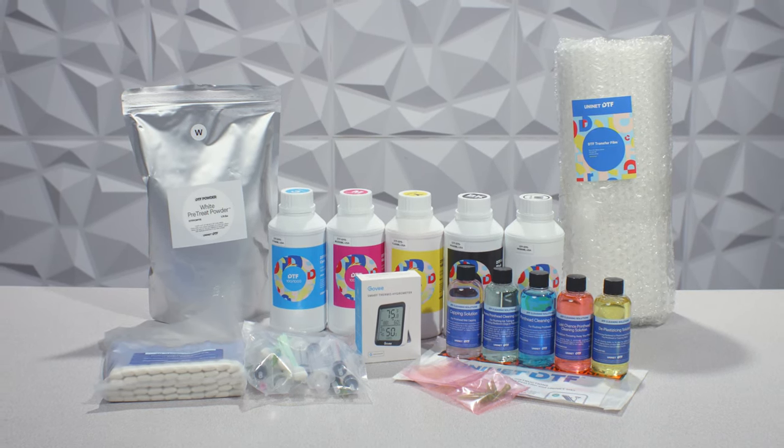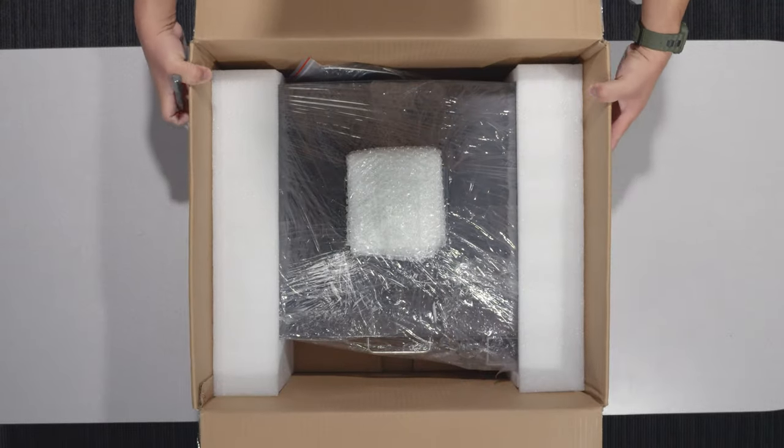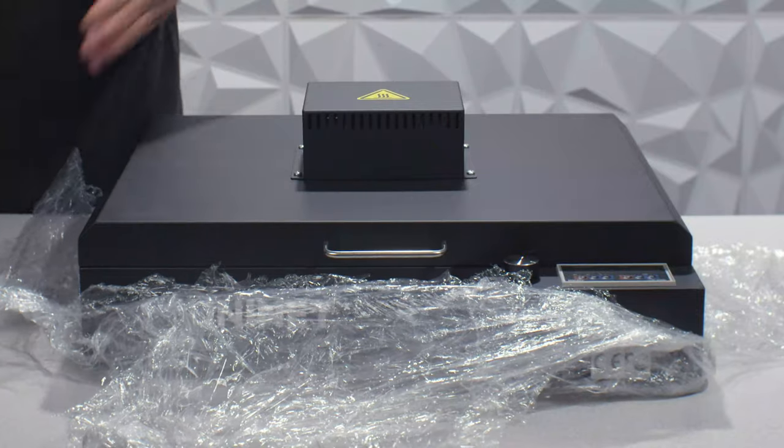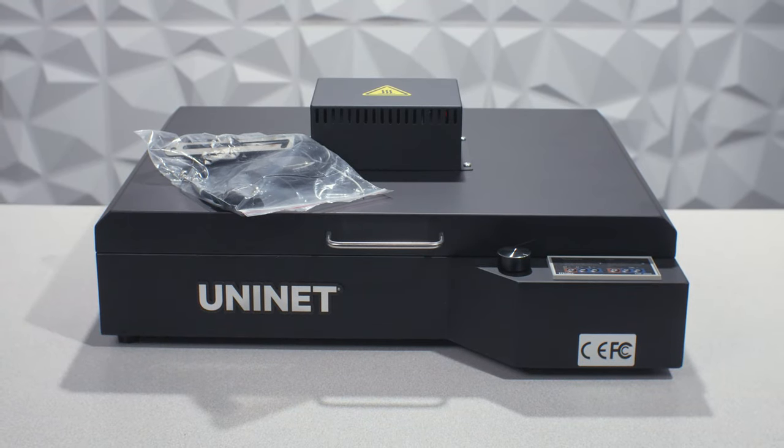This is everything that comes with your UniNet DTF-1000 printer. We also have the UniNet DTF heat station with built-in fume extractor. This machine is used to cure prints, and unboxing it is pretty straightforward.